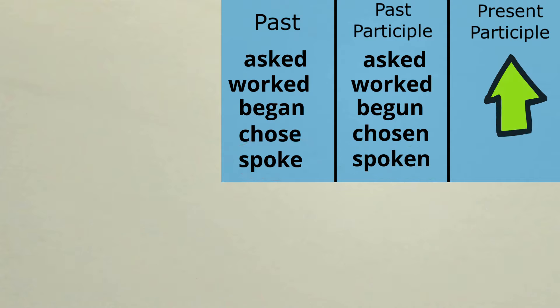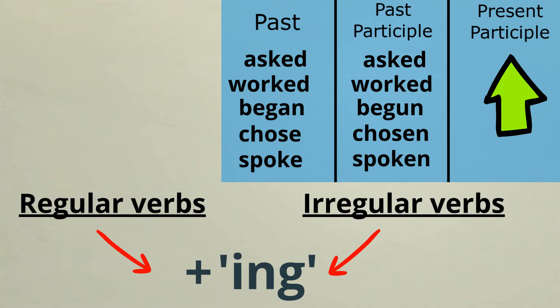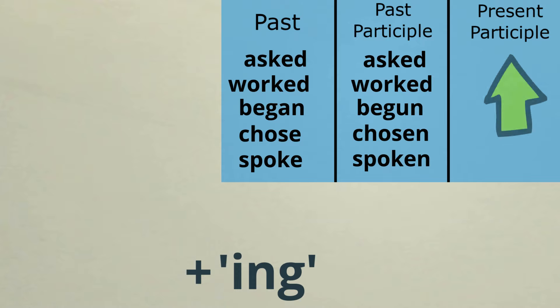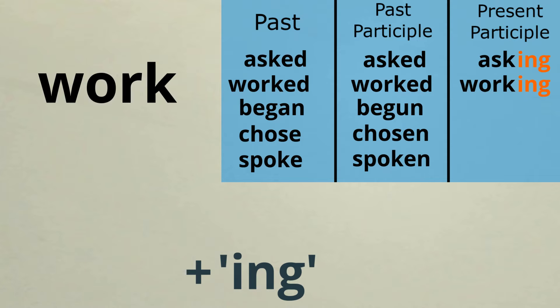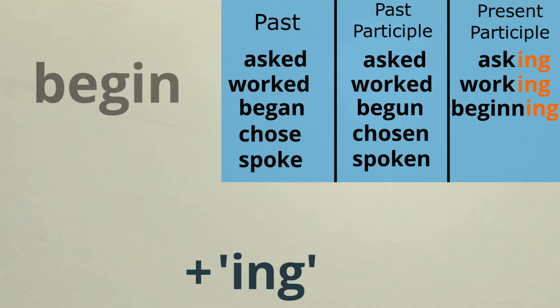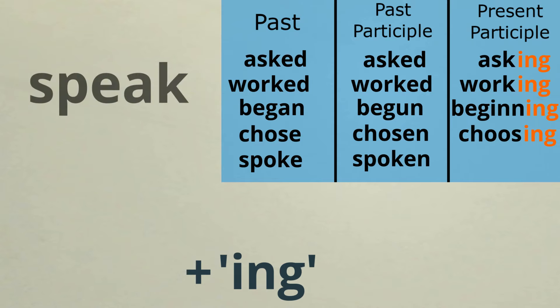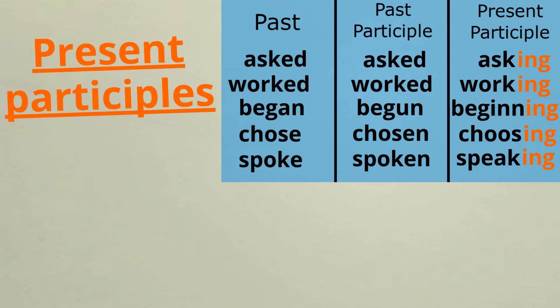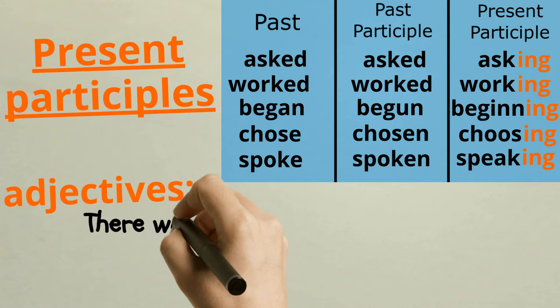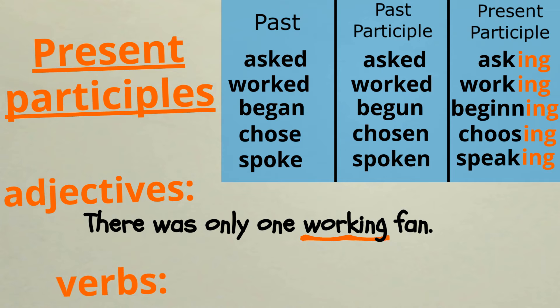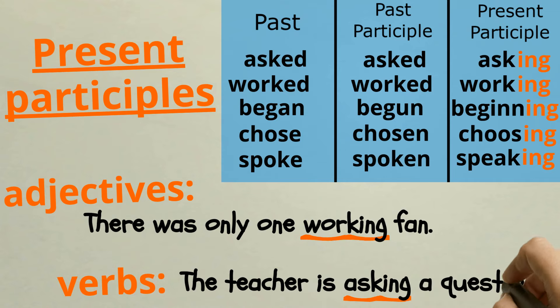Now let's look at present participles. To form these, we add –ing to the end of a verb. This even works for irregular verbs. We can use present participles as adjectives, there was only one working fan, and as verbs. The teacher is asking a question.